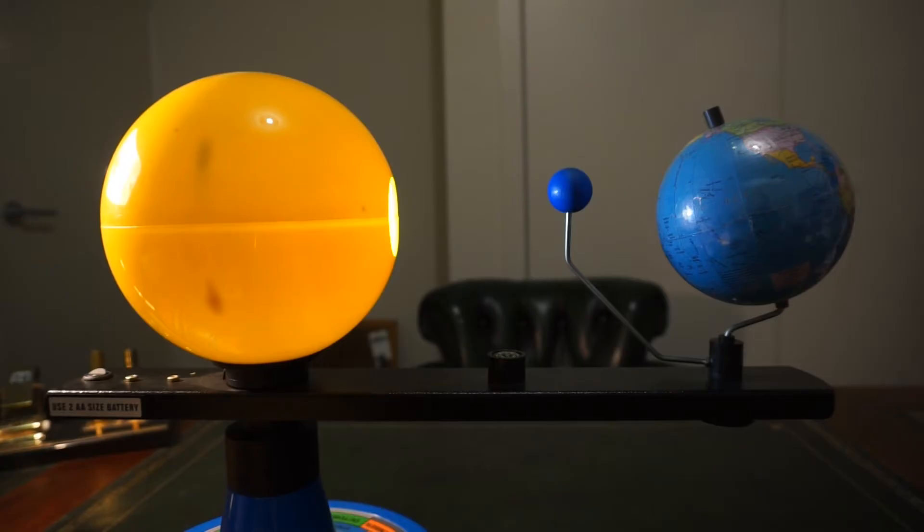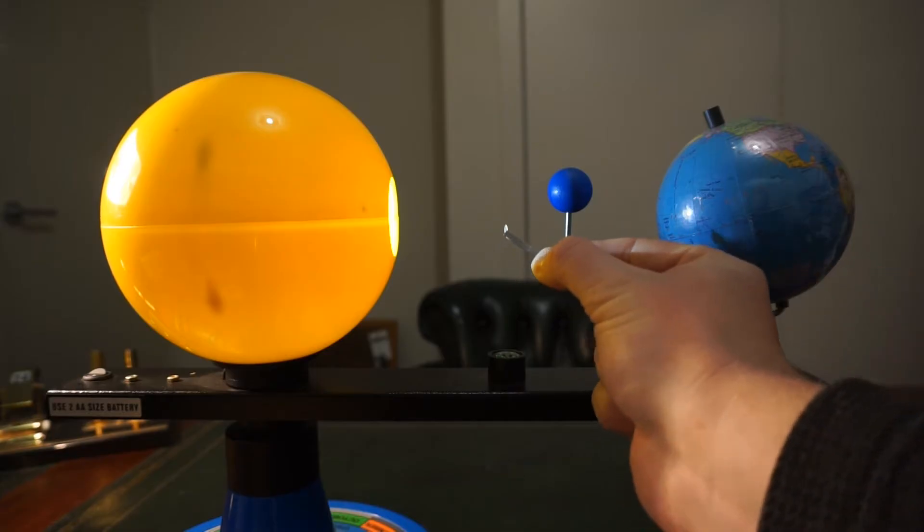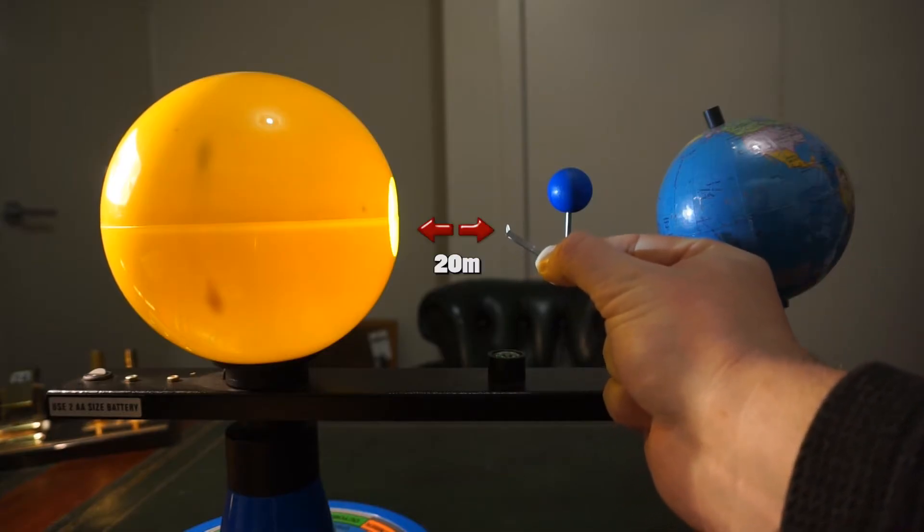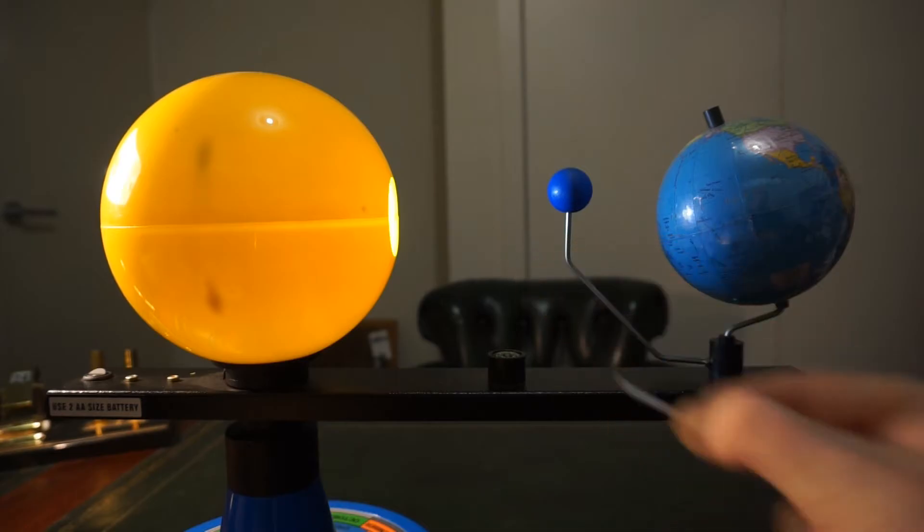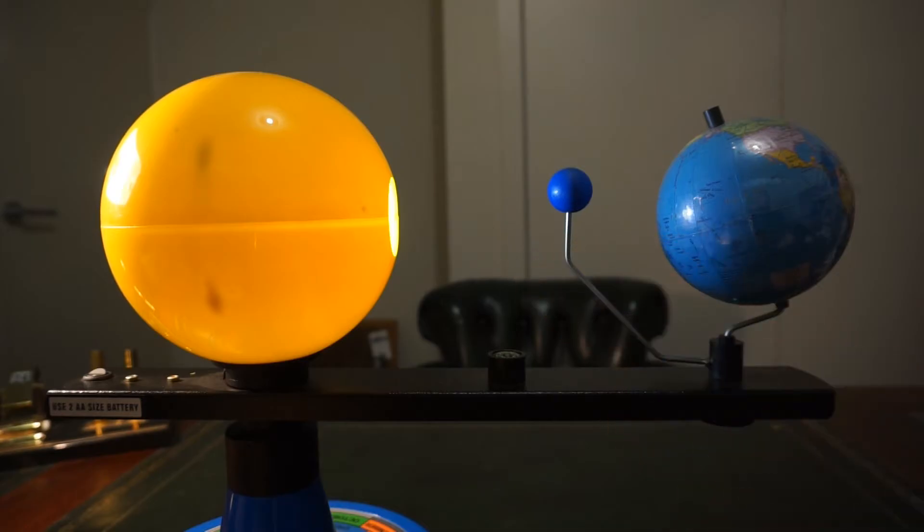And in fact, the Earth, if this was a scale model and the Sun was actually this big, the Earth would only be the size of this grain of rice. And this grain of rice would also be 20 meters away from this Sun. So it's not a scale model in terms of size,